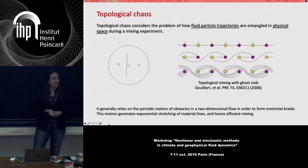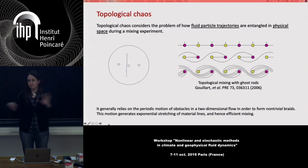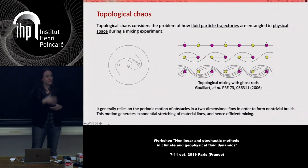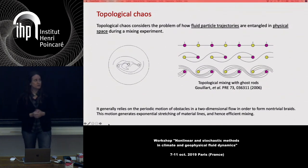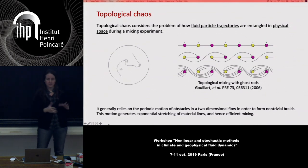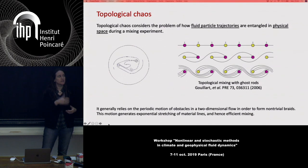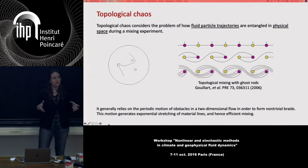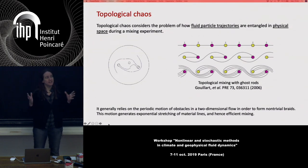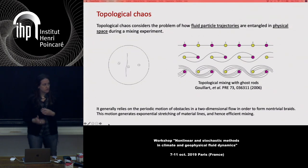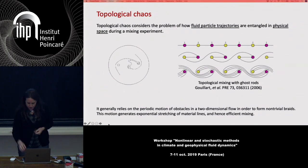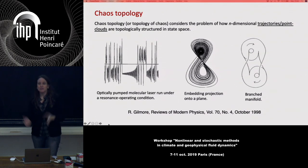I've put this slide because 'topological chaos' is a keyword similar to 'chaos topology,' but it's something different — I'm not going to talk about it. Topological chaos considers the problem of how fluid particle trajectories are entangled in physical space, for instance during a mixing experiment. It generally relies on the periodic motion of obstacles in a two-dimensional flow to form non-trivial braids, generating exponential stretching of material lines and efficient mixing. That's not what I'm going to talk about.